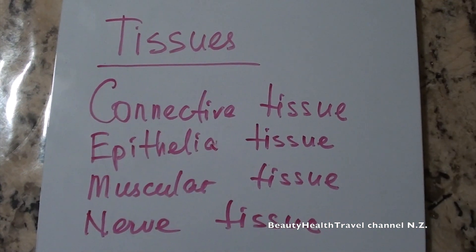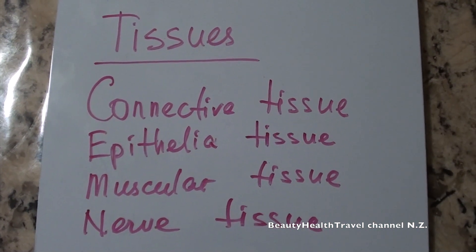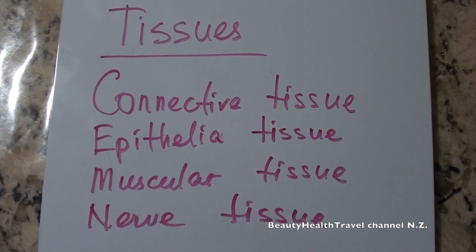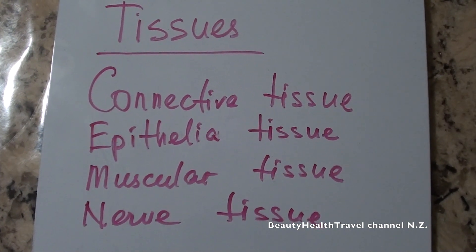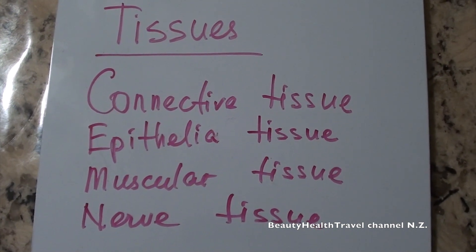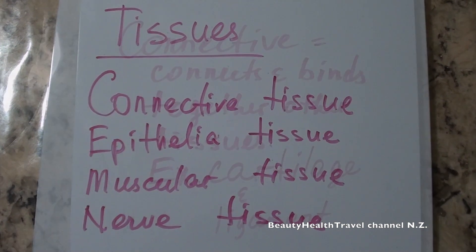The tissues are connective tissue, epithelial tissue, muscular tissue, and nerve tissue.